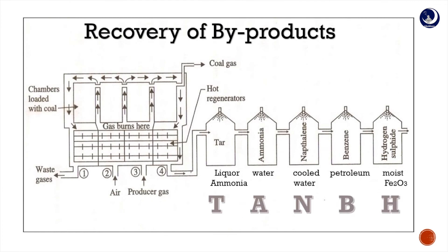Recovery of byproducts: remember the order T-A-N-B-H — T for tar, A for ammonia, N for naphthalene, B for benzene, and H for hydrogen sulfide. The gas coming out from the oven is known as coke oven gas, and it consists of these byproducts: ammonia, tar, naphthalene, benzene, hydrogen sulfide, etc.